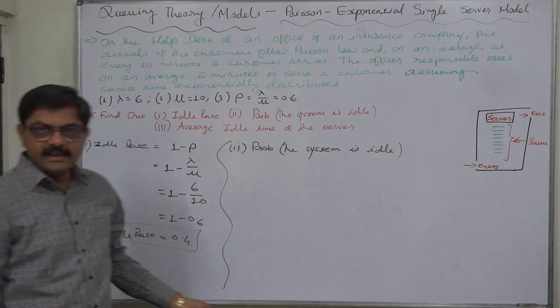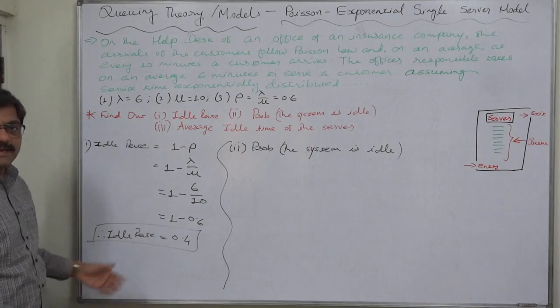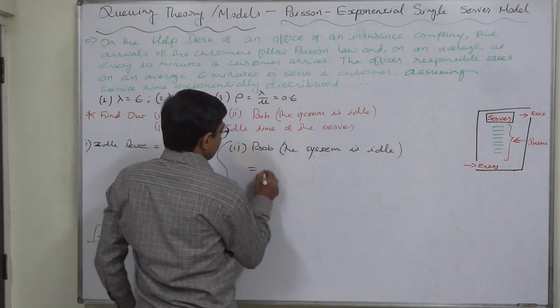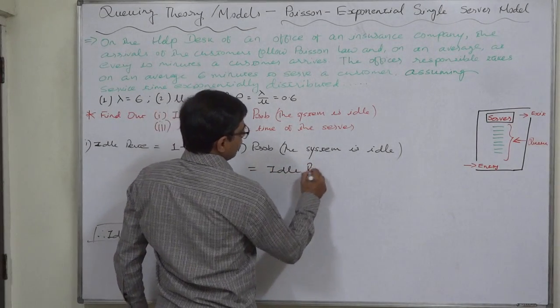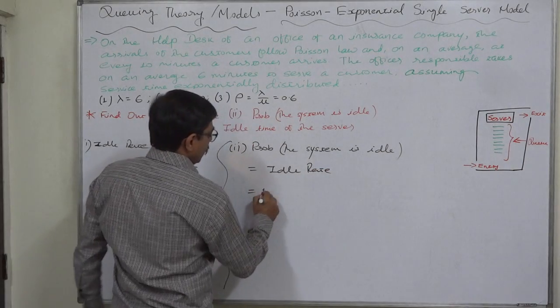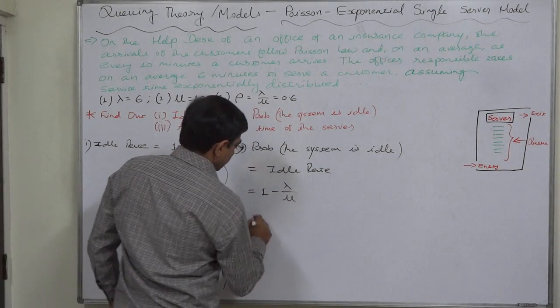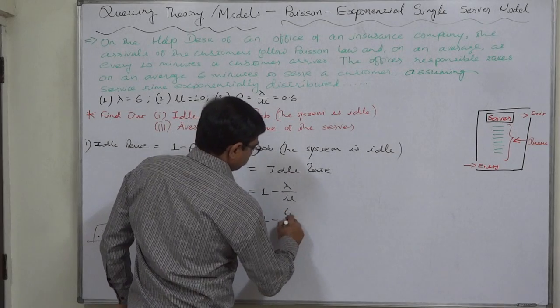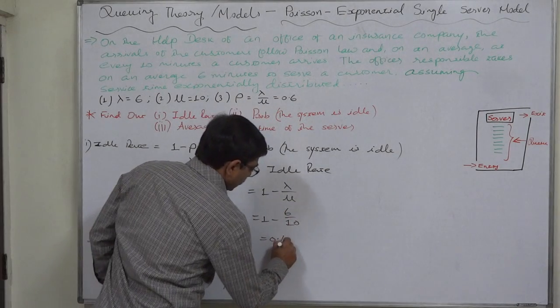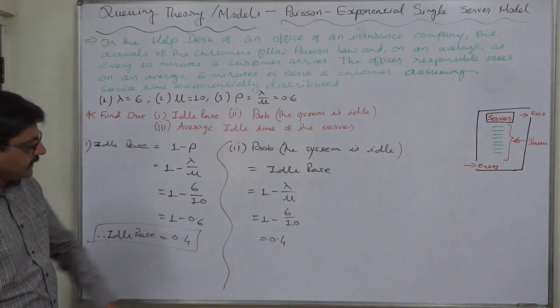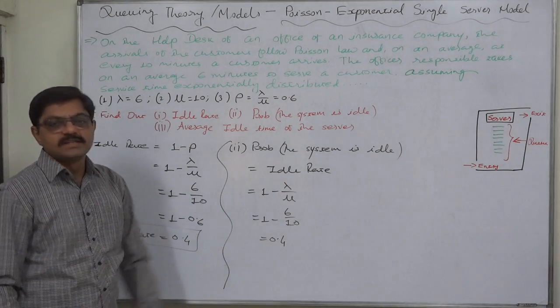That is nothing but the idle rate itself. So, this required probability equals to idle rate which we have already calculated, that means 0.4 is the probability that the system is idle.